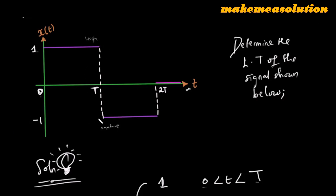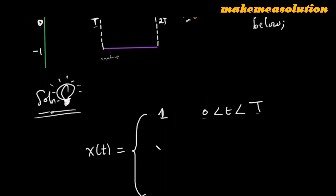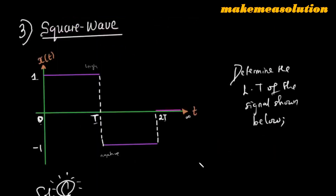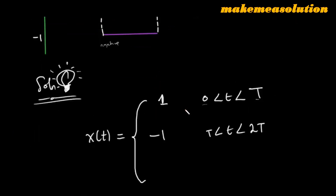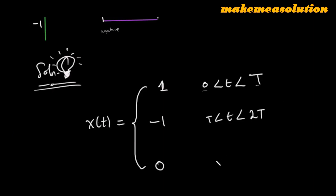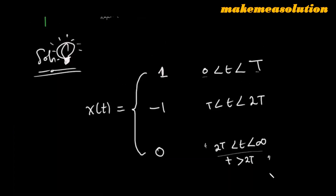The negative polarity gives x(t) equal to minus one between the interval T and 2T. Then finally, the value of x(t) is resting on zero across all remaining portions of the interval, so x(t) equals zero from 2T to infinity. You can write this as 2T less than t less than infinity, or t greater than 2T — both are the same.